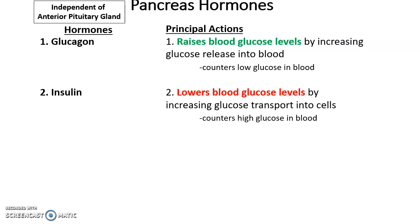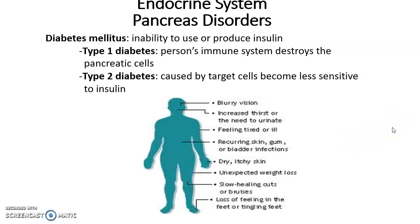Glucose levels are critical and need to be maintained in the proper range, or they can cause significant problems. Diabetes mellitus is the inability to produce or use insulin. Type 1 diabetes is when the person's immune system destroys the cells of the pancreas that produce insulin. Someone with type 1 diabetes has lost those insulin-producing cells and must take insulin by injection regularly to properly regulate glucose levels.